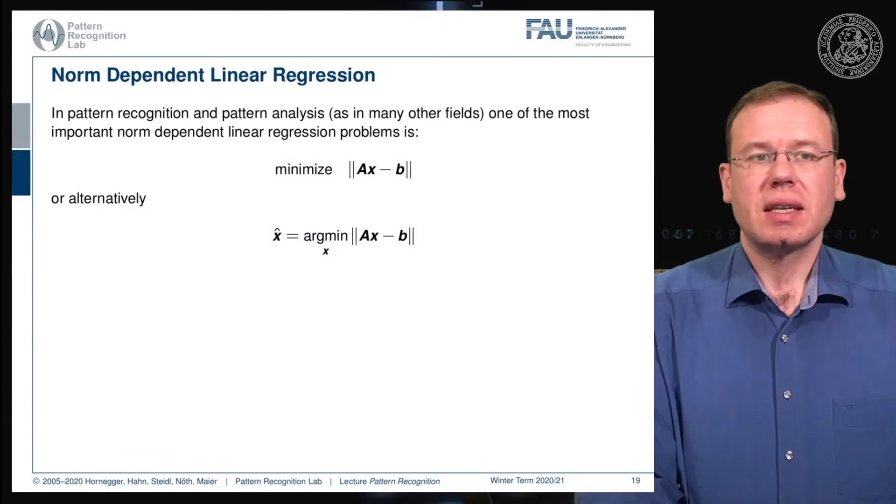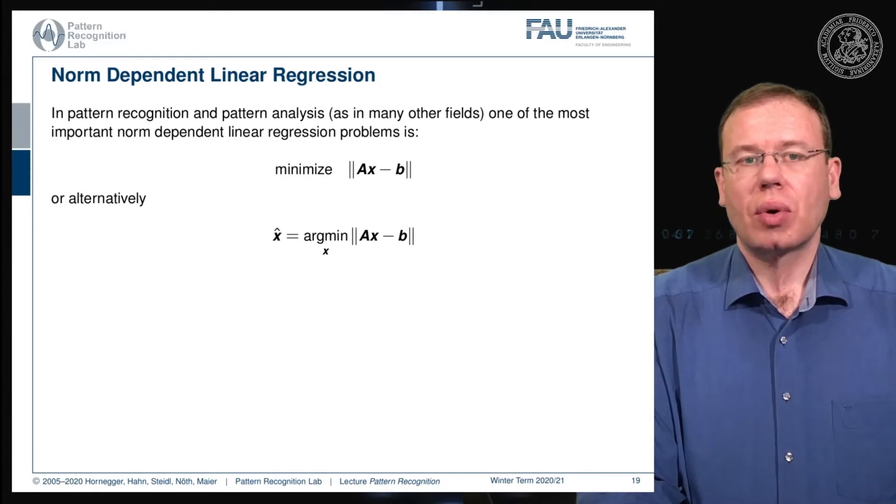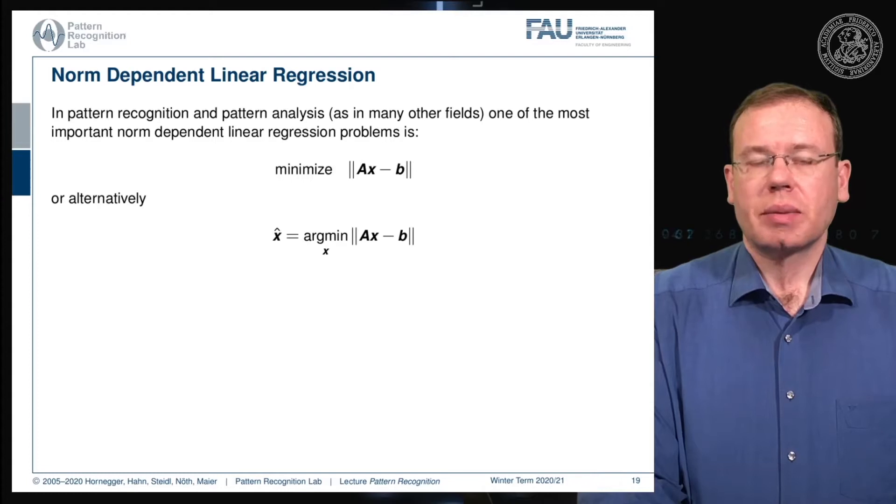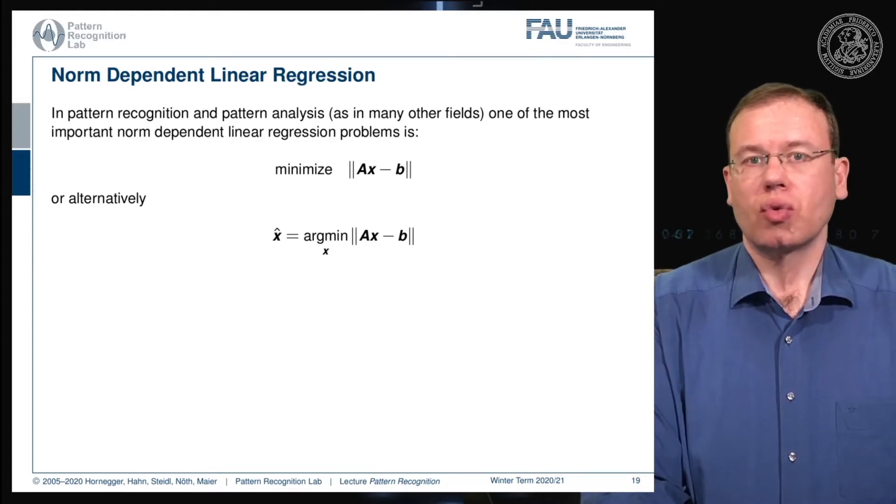Here you see the norm dependent linear regression. We essentially put up the norms that we've seen previously into the optimization problem. We have some matrix A and some unknown vector x, subtract it from b and take the norm. We can write this down as a minimization problem, so the variable that we're looking for is determined as the argument of the respective norm problem.